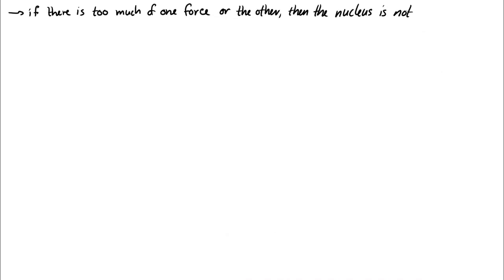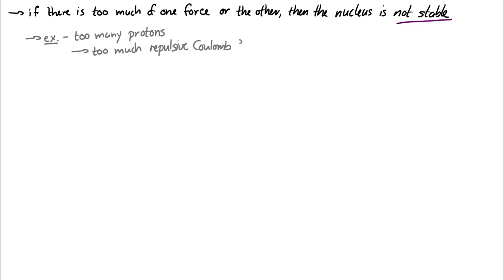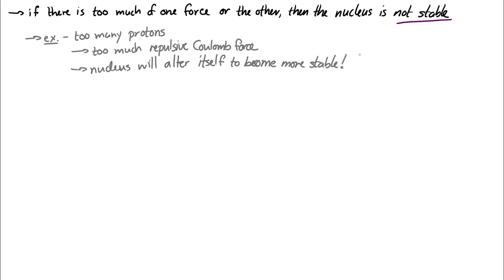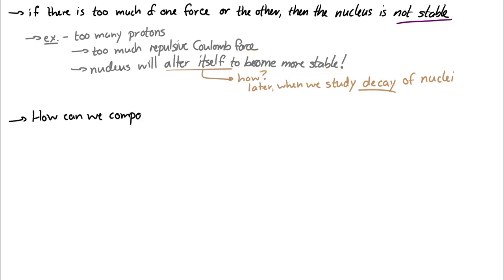If there's too much of one force or the other, the nucleus is not stable. For example, if there are too many protons and too much repulsive force, the nucleus will alter itself to become more stable. This process is called decay. Just know that if a nucleus is not stable, it will find ways to become more stable.